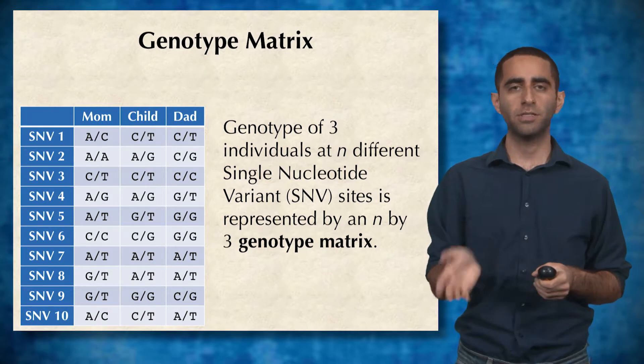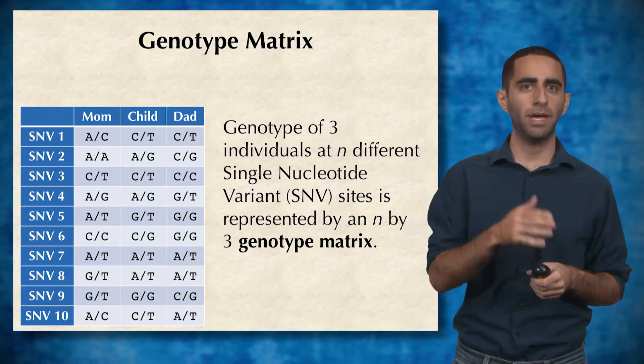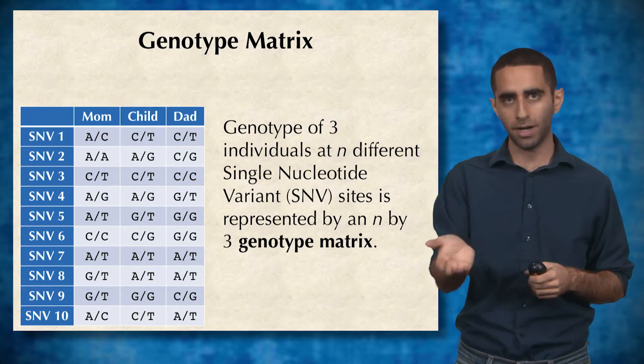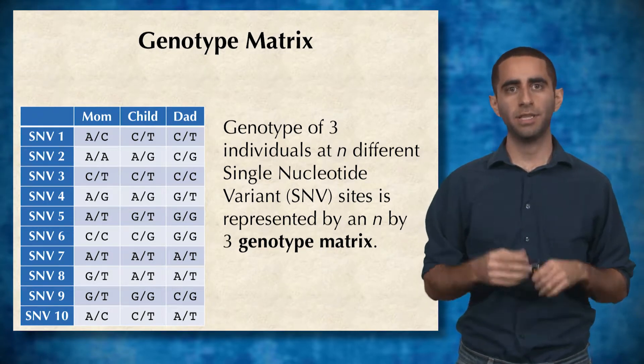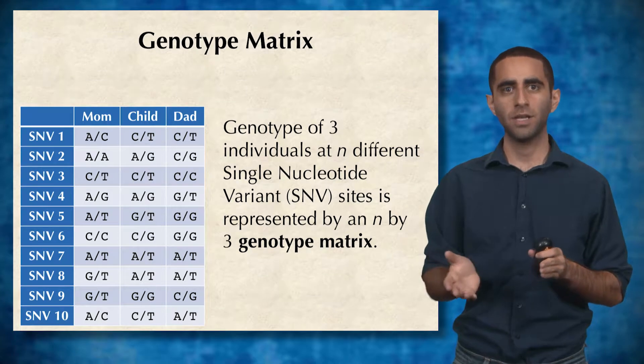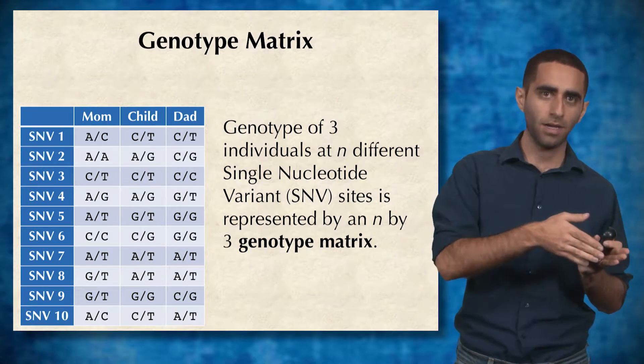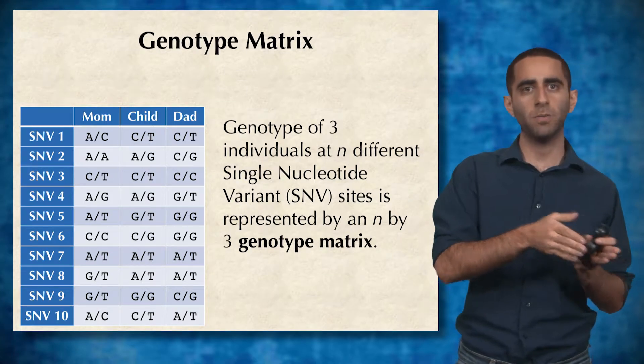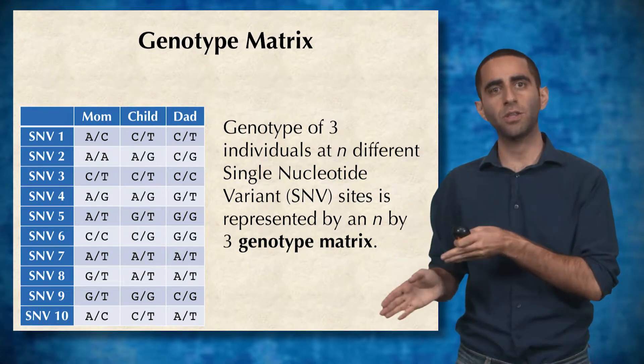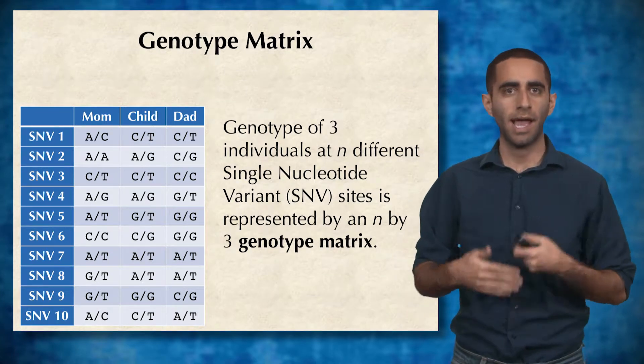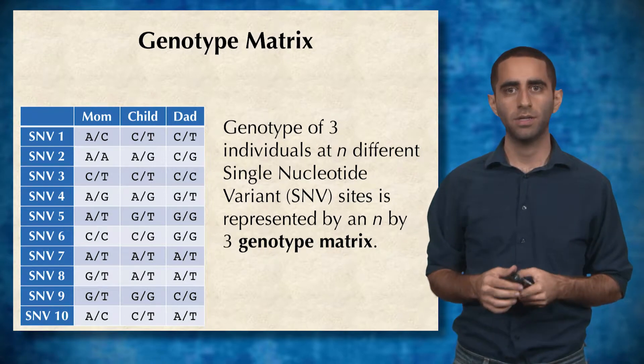For example, the top left cell SNV1 for mom tells me that the mom has an A on one chromosome and a C on the other chromosome at position one of her genome.